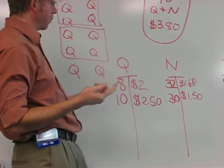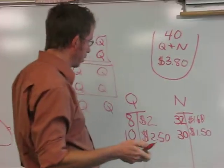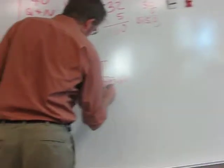If I add up 250 and 150, well the 2 and the 1, that's going to be 3. The 50 and the 50 is going to be 4. Oh, that's $4. It's a little bit too much.